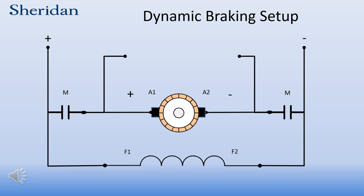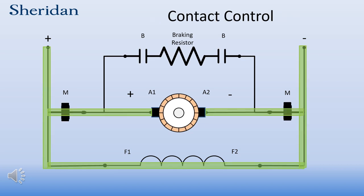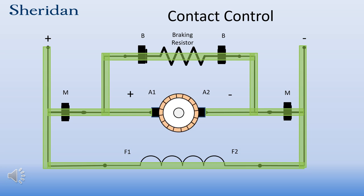Let's look at the dynamic braking setup. A resistor is connected to the armature through a set of load contacts, shown here as B for braking relay. When the contacts close, the resistor will be across the armature. It is very important to note that the B contacts and the M contacts must be controlled so they cannot be closed at the same time. If they are, the braking resistor would receive supply voltage and current would continuously flow through it, causing it to heat up and possibly burn up.